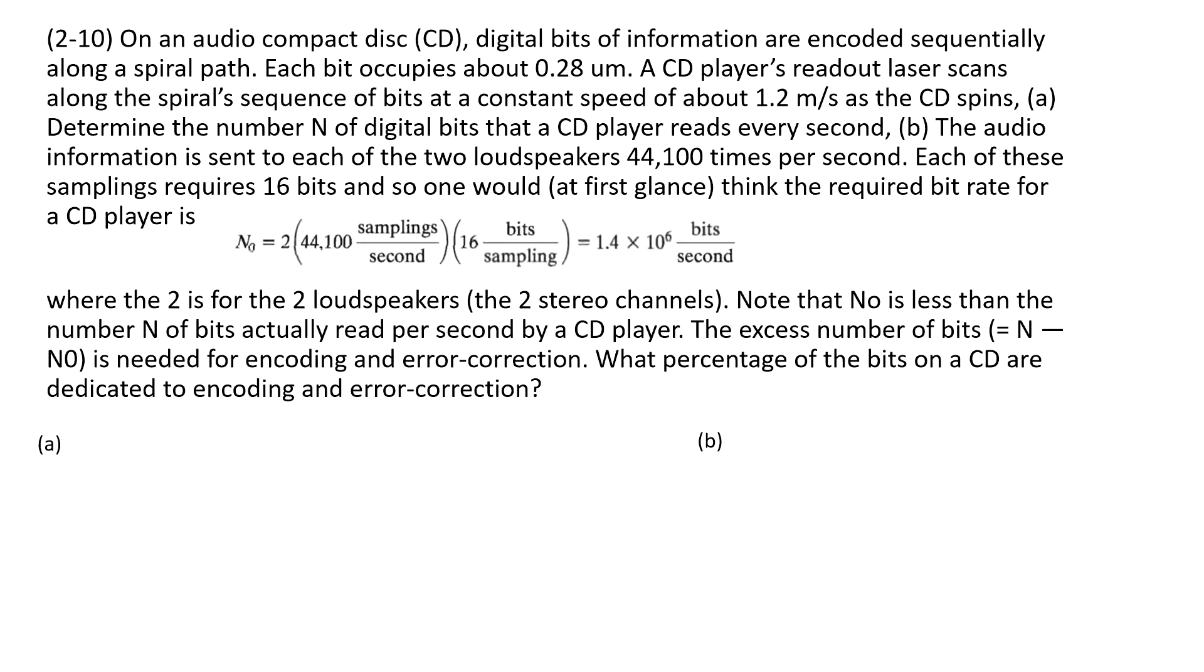In this problem, it tells us about a disk, a CD, and how it works. It tells us each byte occupies a length of 0.28 micrometer. And then it tells us how the CD player reads it. The CD player reads at a constant speed of about 1.2 meters per second.